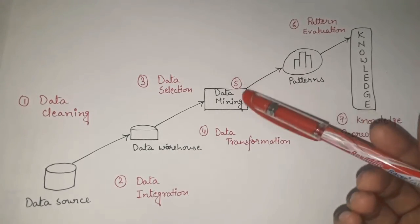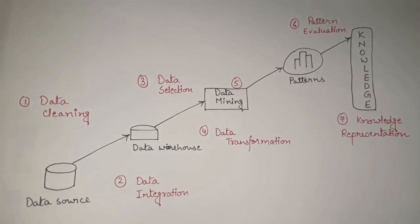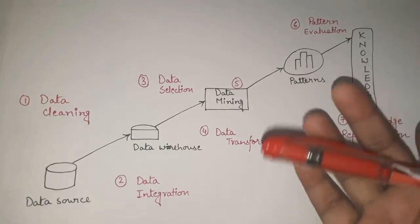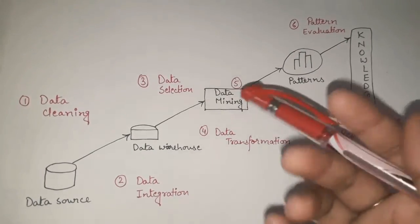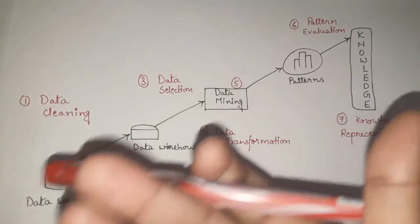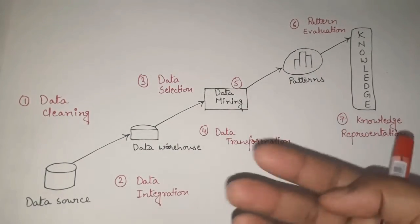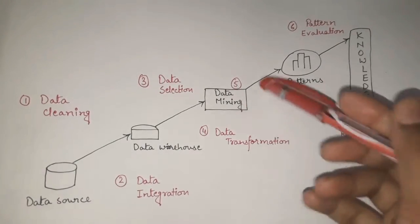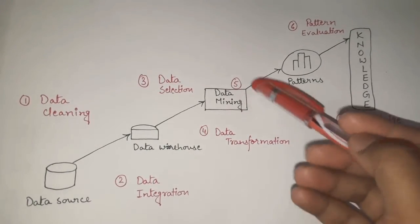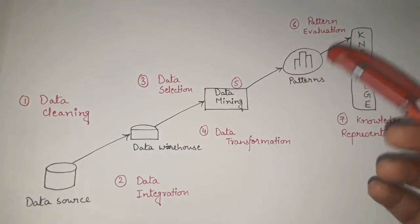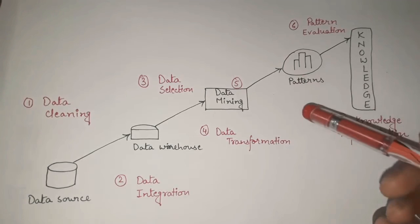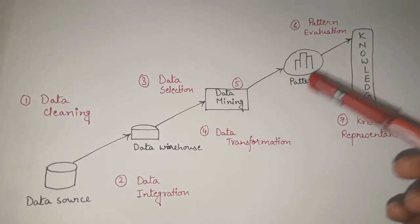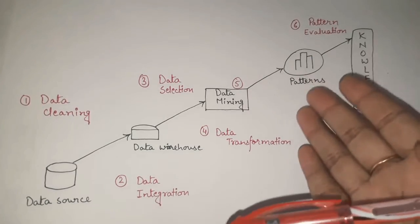After having data in a similar format, we perform the fifth step: Data Mining. Data mining is nothing but finding patterns or relations among the data. We now have data all in the same format, and we try to find similarities, patterns, or relations among the data. After performing data mining, we get patterns.